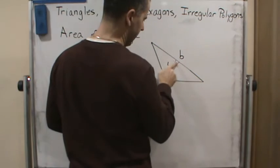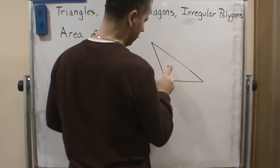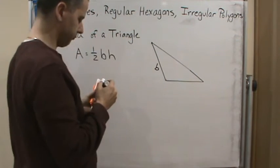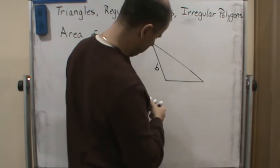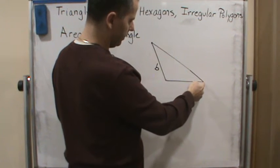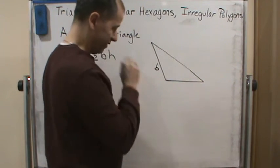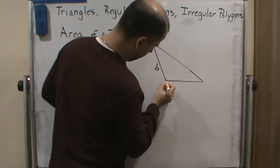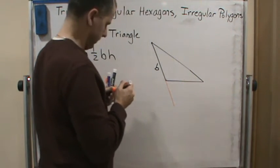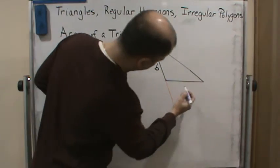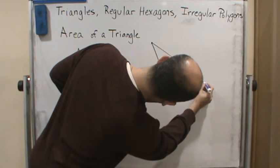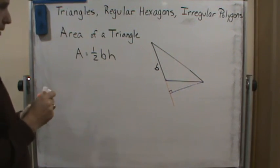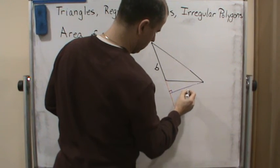And then finally we have a third side. So what if that side is the base? If this is the side, if this is the base, then again we're going to want to draw an altitude, a perpendicular from this vertex to the base. So again we would extend the base and draw a perpendicular to it, just like so.